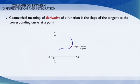The geometrical meaning of derivative of a function is the slope of the tangent to the corresponding curve at a point.